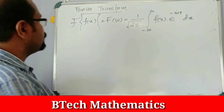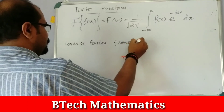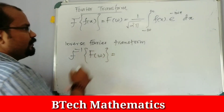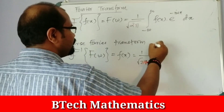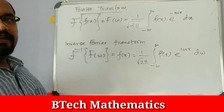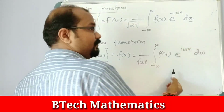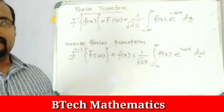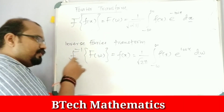We will also learn the inverse Fourier transform. The inverse Fourier transform is denoted script-F inverse of F(ω), and equals f(x), which is 1 over root(2π) times the integral from minus infinity to infinity of F(ω) times e raised to i·ω·x dω.